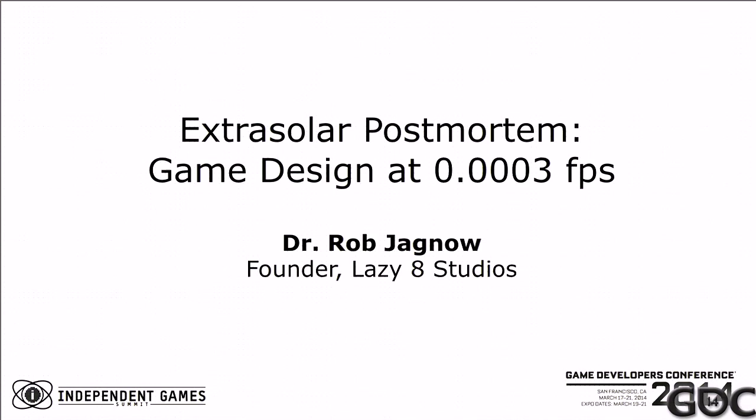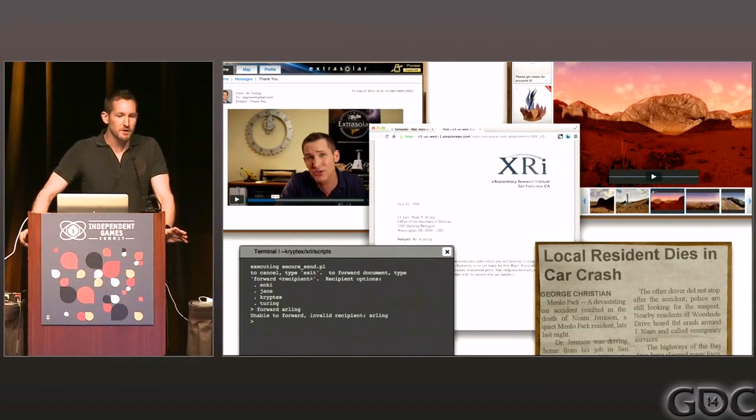You might look at this and assume the title is a mistake, some sort of typo — 'game design at 0.0003 frames per second.' ExtraSolar actually renders one frame per hour. I'll explain that, and talk a little about what the experience of ExtraSolar is like, and then about its evolution, which will slowly explain why I've created the world's least performant video game.